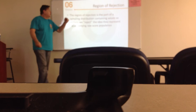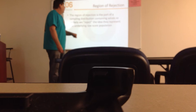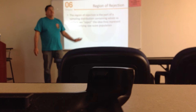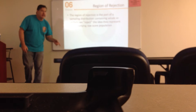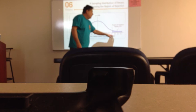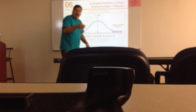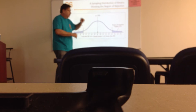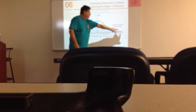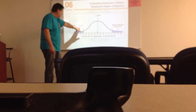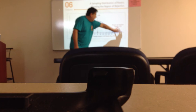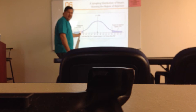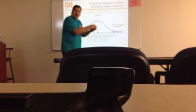The region of rejection is a part of the sampling distribution containing values so unlikely that we reject the idea they represent the underlying raw scores of the population — they're different. I'll set my alpha level or region of rejection at .05. If I'm looking at both tails — a two-tailed test — I'm going to split my alpha level, taking alpha divided by 2 and putting half here and half here. So 2.5% of all possible scores are in each tail. If my mean falls in either region of rejection, I have to assume that this sample is not the same as the population.